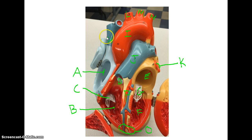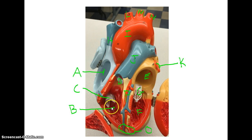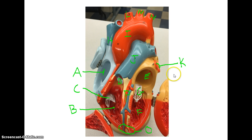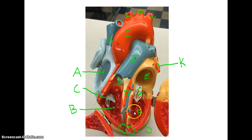One more time through the order: superior vena cava, inferior vena cava, right atrium, tricuspid valve, right ventricle, pulmonary semilunar valve, out the pulmonary artery, to the lungs where it's oxygenated, back through the pulmonary veins, the left atrium, the bicuspid or mitral valve, the left ventricle, and out the aortic semilunar valve.